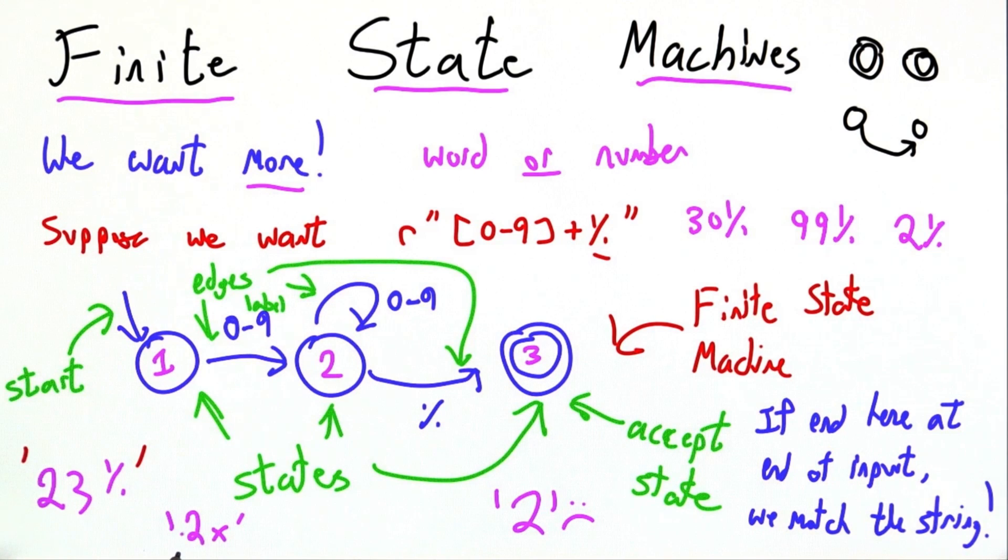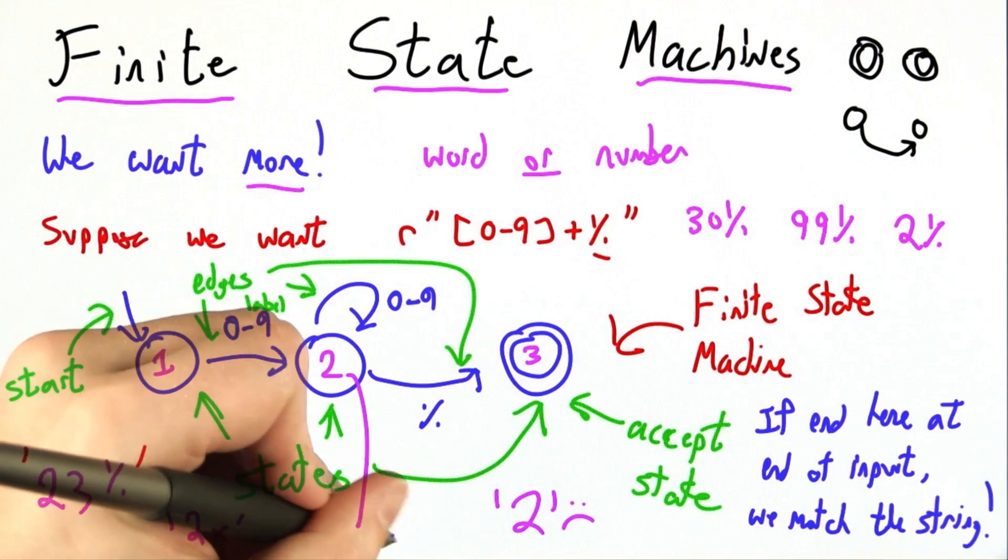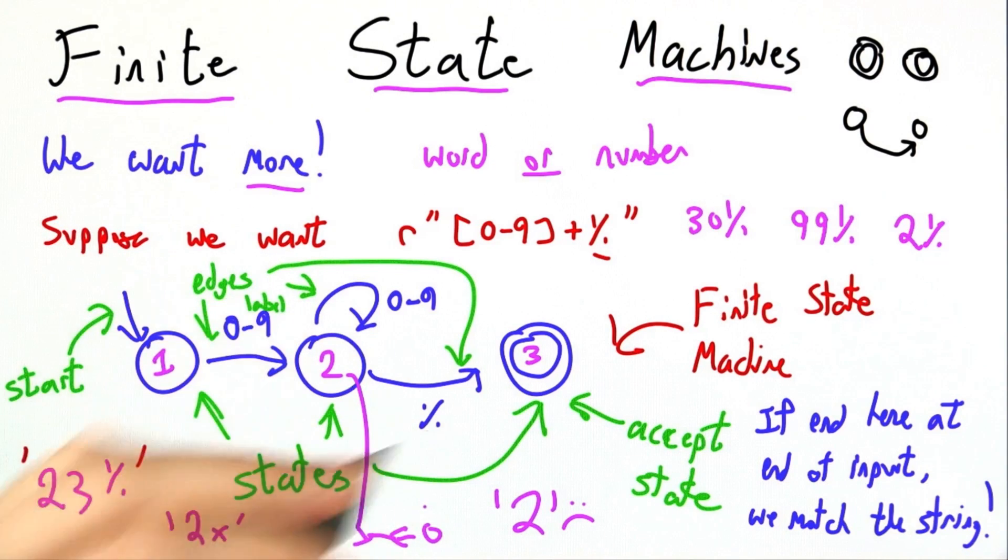Finally, let's consider the string 2x. We start here in state 1. We see a 2, so we go over to state 2, and then we see an x, and there's no outgoing edge from state 2 on an x, so we fall off the finite state machine and die. This is very sad, and when this happens, our finite state machine does not accept the string, just like the regular expression would not.